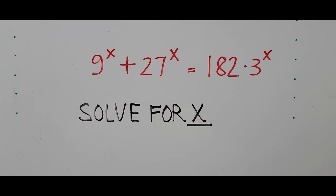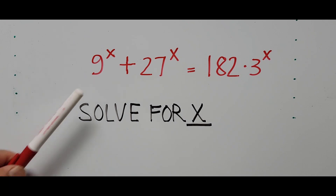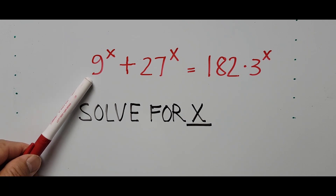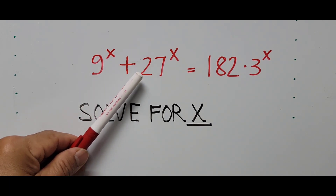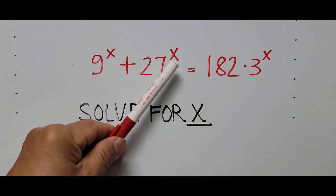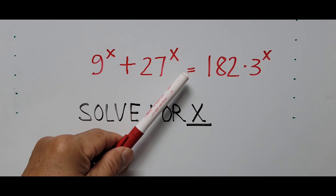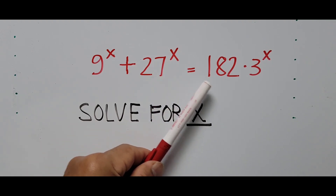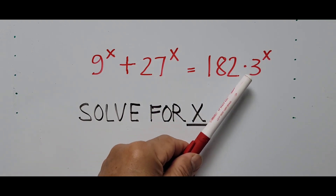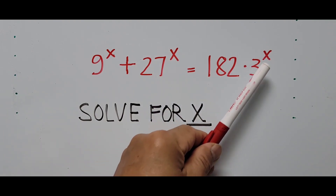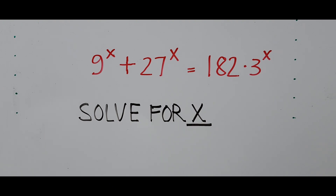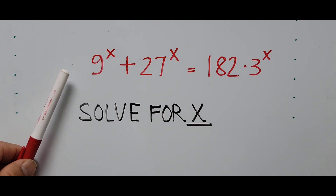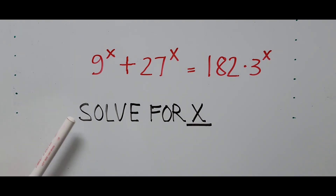Welcome to Cassiano Easy Math. This video is about solving another exponential equation: 9 raised to the x power plus 27 raised to the x equals 182 multiplied by 3 raised to the x power, and we have to solve for the value of x.